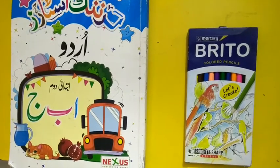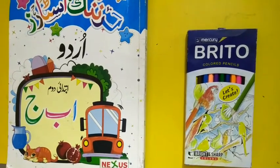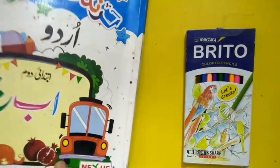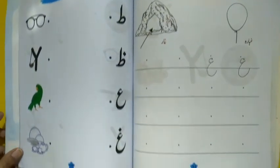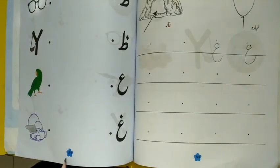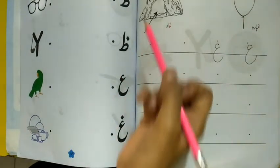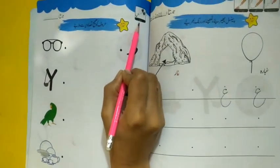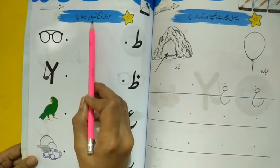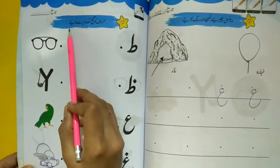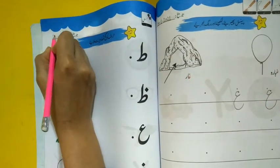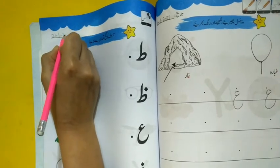Assalamualaikum. Dear children, today we will work in our Urdu book. Let's open our Urdu book. Urdu book page number 89 — match. Put today's date. Today's date is 27th January 2021.